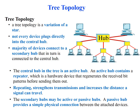Tree topology is the third topology. It is exactly a variation of star topology — it looks like a star, but not every device plugs directly into the central hub. In tree topology, the majority of devices connect to secondary hubs, and the secondary hubs connect to the central hub. The central hub is an active hub, while secondary hubs may be either active or passive. A passive hub provides only a simple physical connection with attached devices. An active hub has further hubs connected to it, while a passive hub extends connections only to devices.